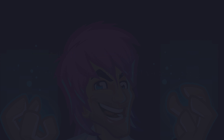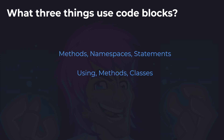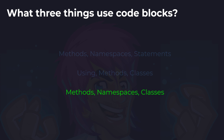Now this one might be tricky. What three things use code blocks? Is it methods, namespaces, and statements? Is it usings, methods, and classes? Or is it methods, namespaces, and classes? The correct answer is methods, namespaces, and classes. The first answer is invalid because a statement uses a semicolon and doesn't have a code block. And the second is invalid because the using directive ends in a semicolon.